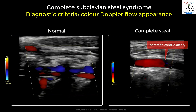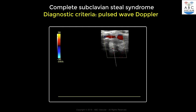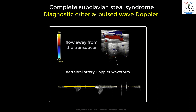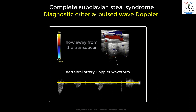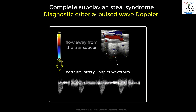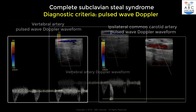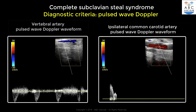A second criterion used to confirm the presence of a complete steal of the flow through the vertebral artery is the Doppler waveform. Simply obtain a Doppler waveform from the vertebral artery and observe the direction of the flow. In this example, the vertebral artery Doppler waveform is below the baseline, indicating that the flow is directed away from the transducer. This criterion is used to confirm the color Doppler flow findings.